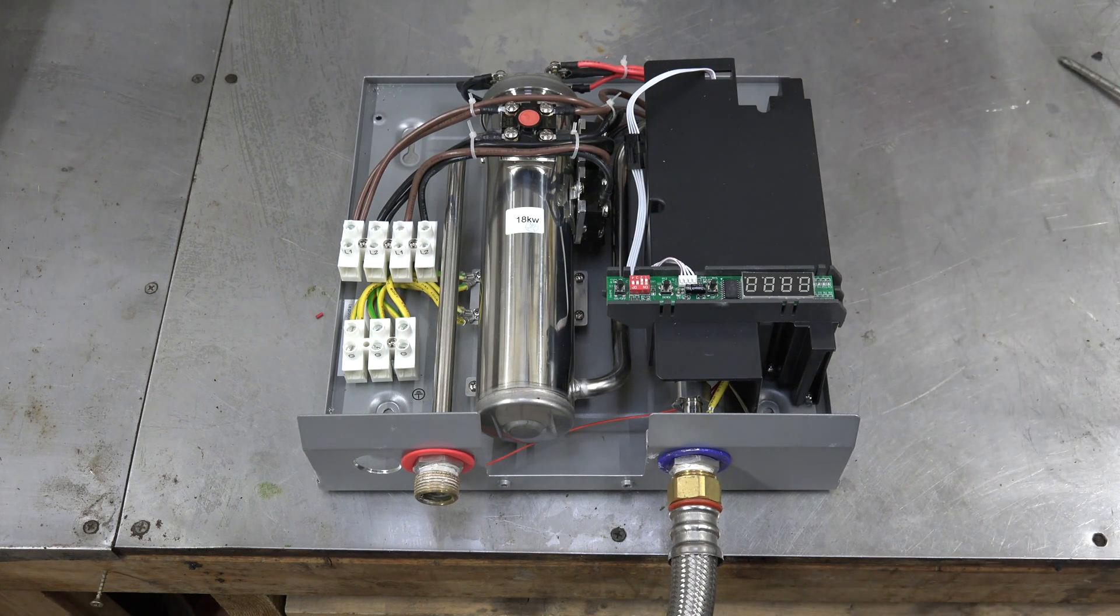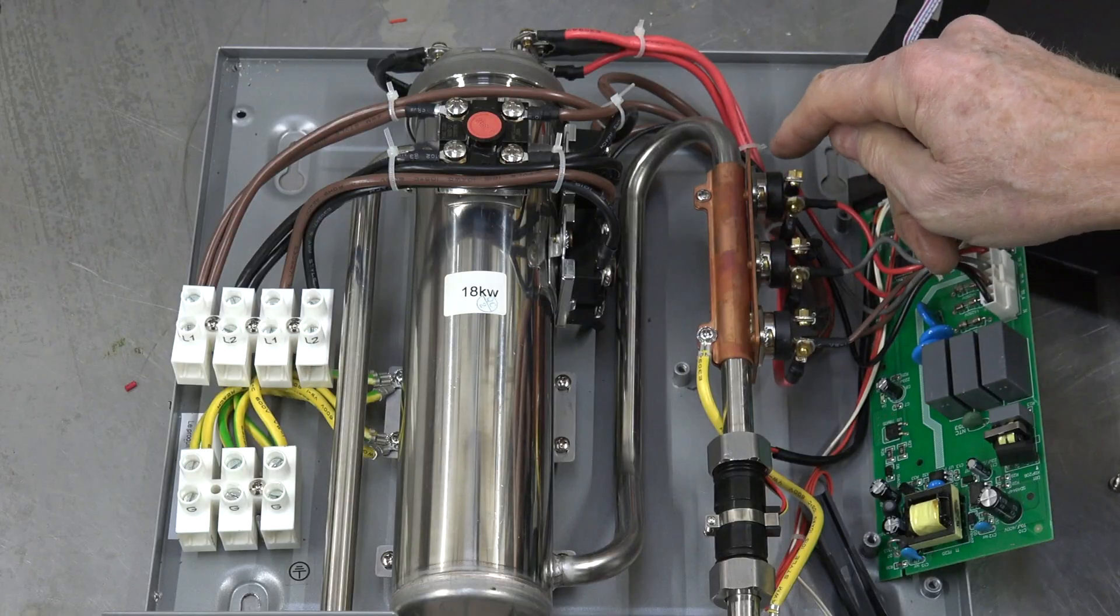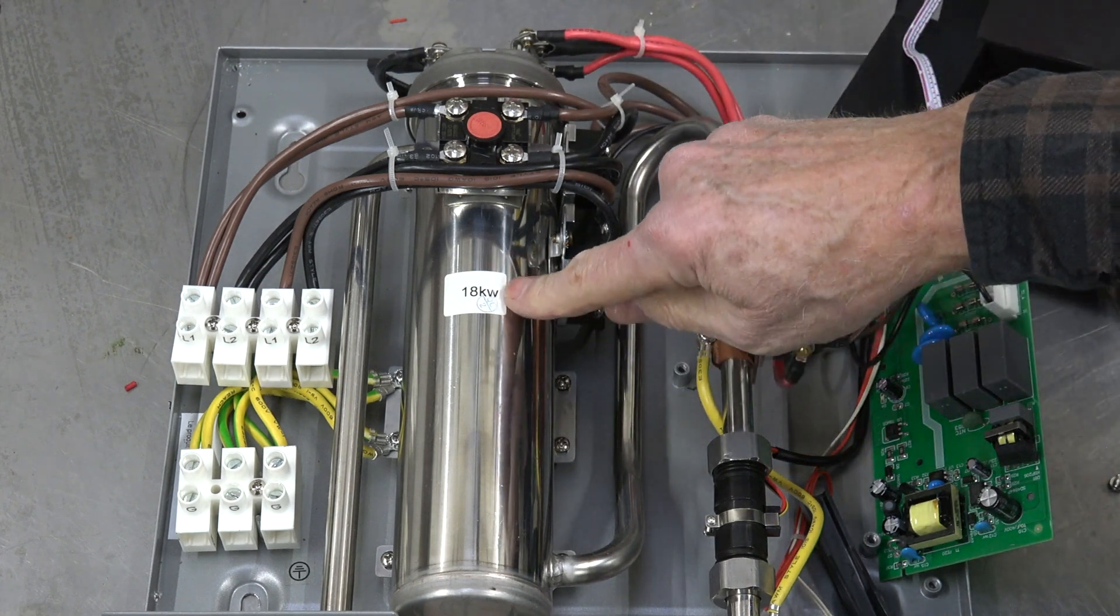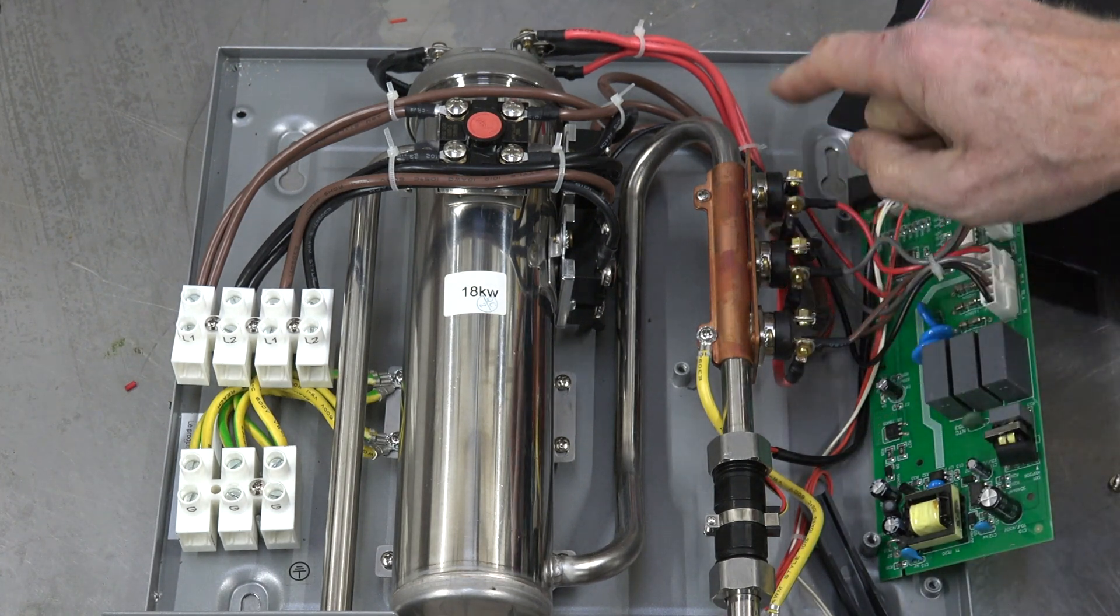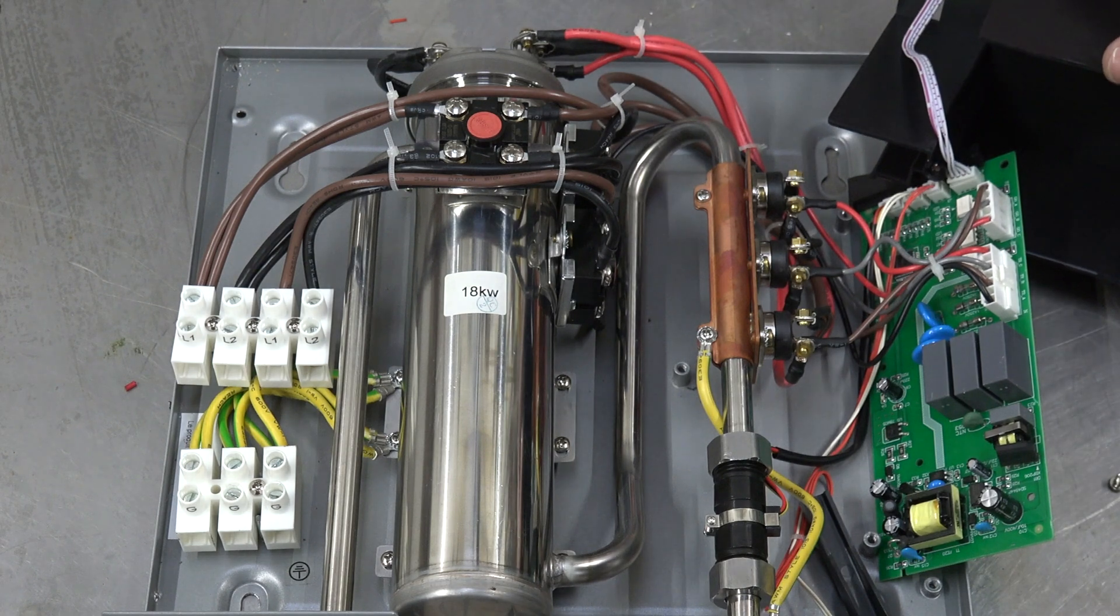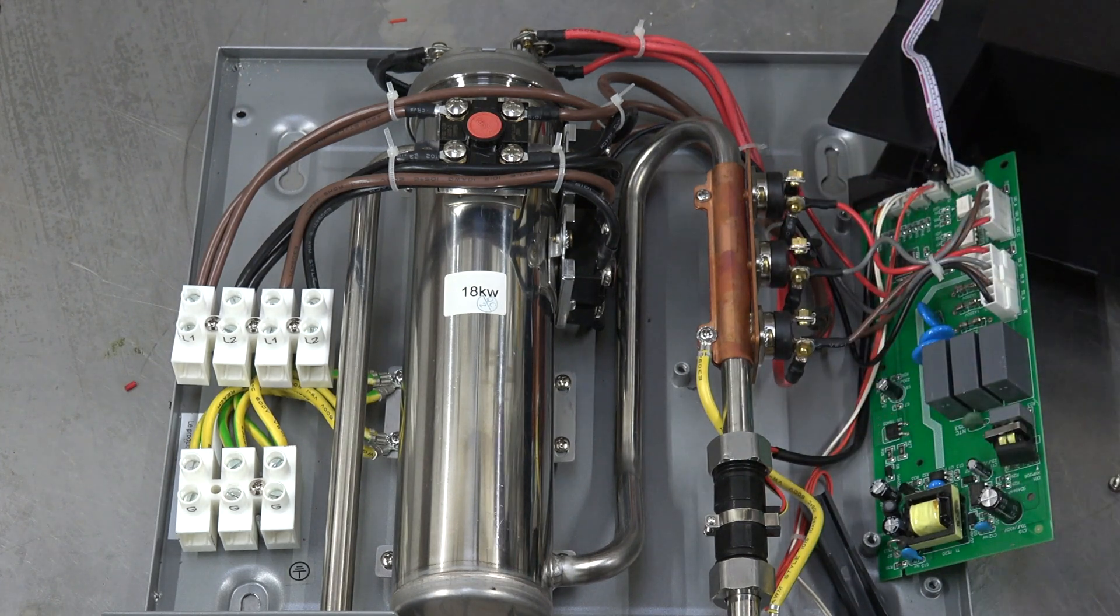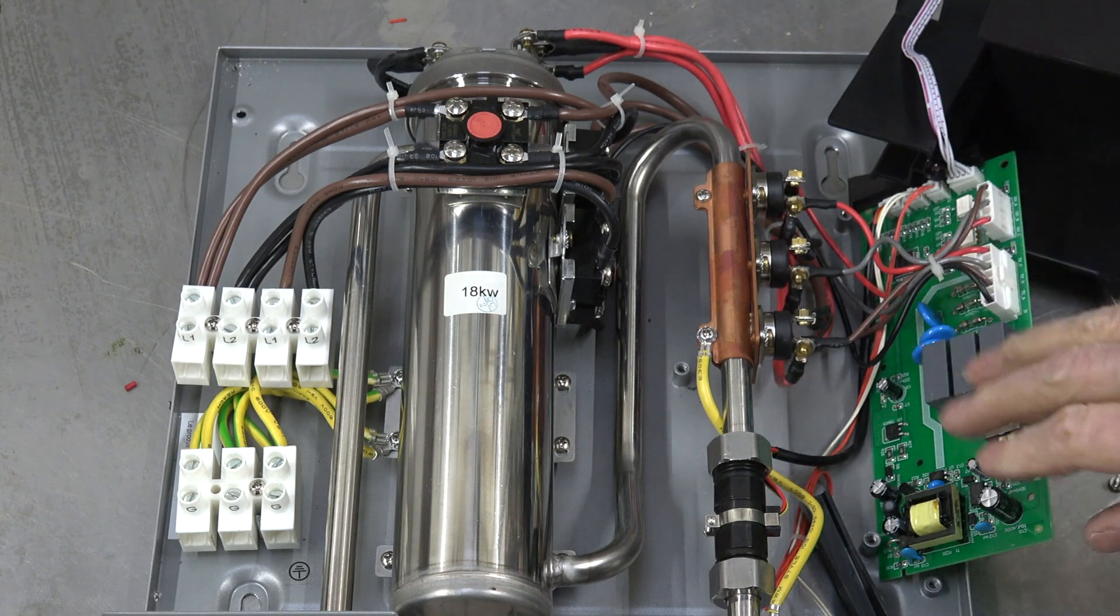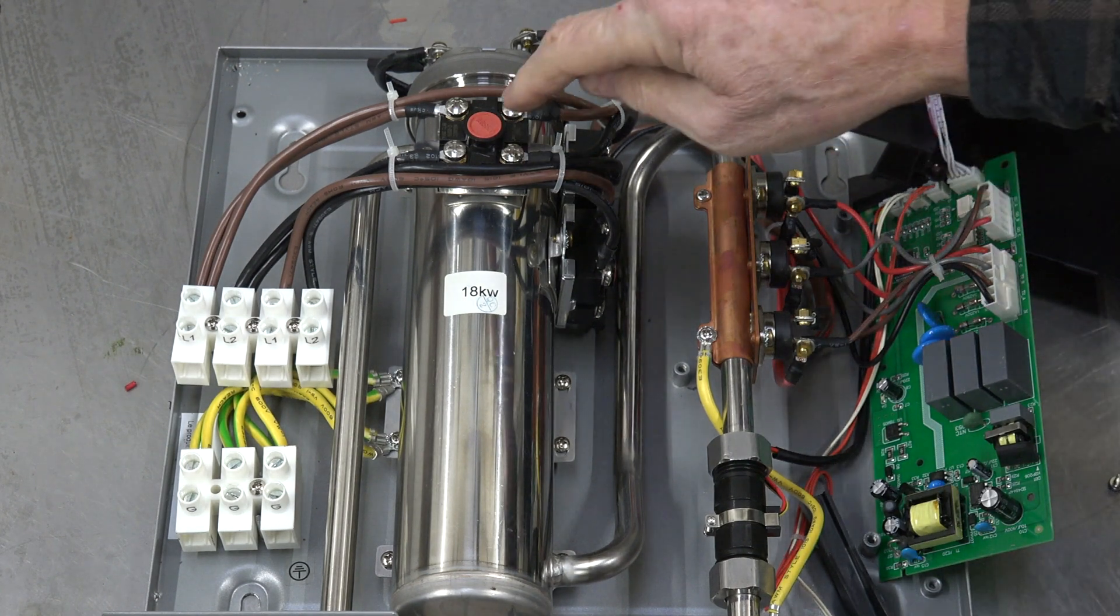So looking at this thing with the cover off of it, we've got three switches there. Those are the control switches that turn the elements on. Remember I said there were three elements, 18 kilowatts, six each. These are the shutoffs. If there is water flowing through it, it allows the elements to come on through these switches and they will heat until they get to the proper temperature that you've set, and then the electronic board shuts them off.